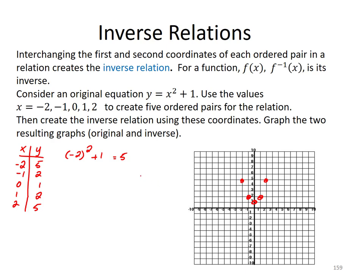Now my inverse relation will be interchanging the x and y, as we said. So that would be a table of y then x, and that would be interchanging those.